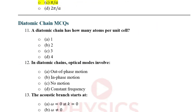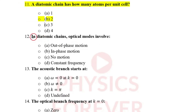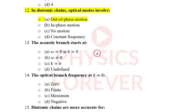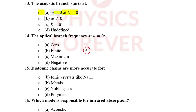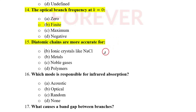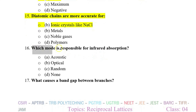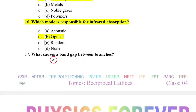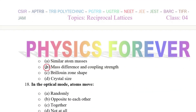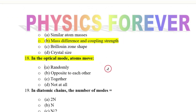Now questions related to the diatomic chain. A diatomic chain has two atoms per unit cell (correct option: 2). In a diatomic chain, optical modes involve out-of-phase motion. The acoustic branch starts at omega = 0 when k = 0. The optical branch frequency at k = 0 is finite (option B). Diatomic chains are more accurate for ionic crystals like sodium chloride. The mode responsible for IR absorption is the optical mode. The band gap between branches is caused by mass difference and coupling strength.